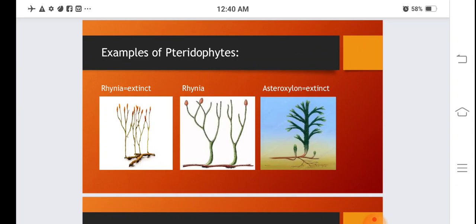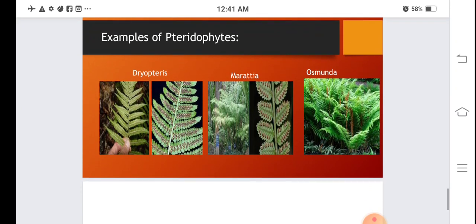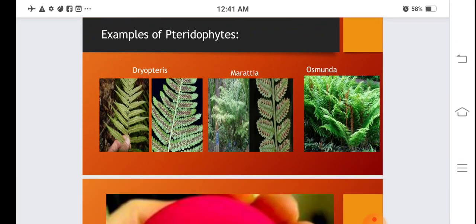This plant Rhynia is nowadays extinct. Another extinct plant, Asteroxylon, is also found. Dryopteris, Marattia, and Osmunda are also examples of pteridophytes. Osmunda is found nowadays in living state.